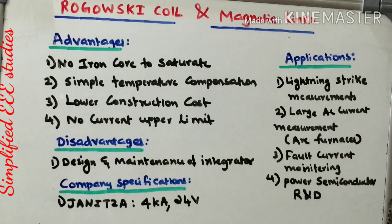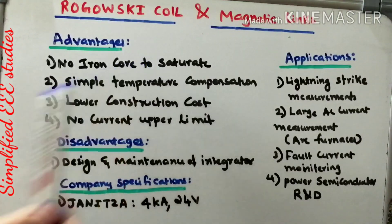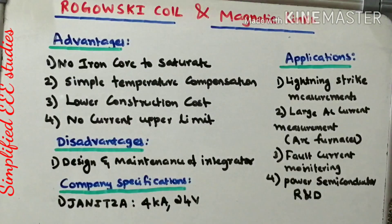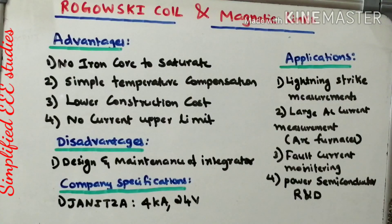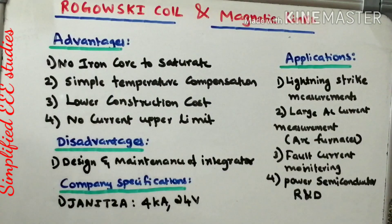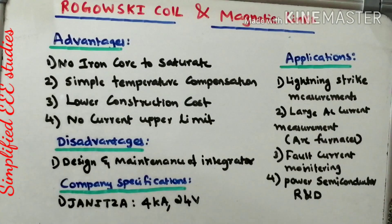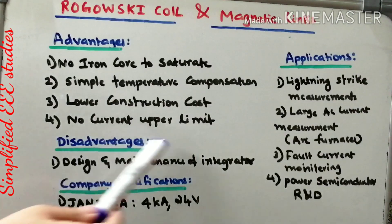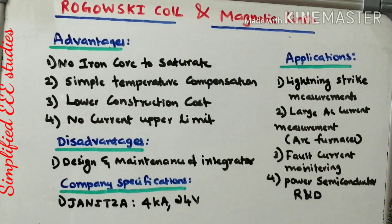Now let us discuss the advantages of the Rogowski coil. First, there is no iron core to saturate, so iron core loss is negligible. Second, temperature compensation is simple. Third, construction cost is low since it is essentially a toroid. Fourth, there is no upper current limit. These are the key advantages of the Rogowski coil.